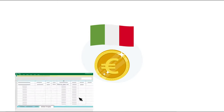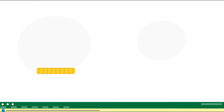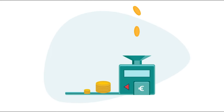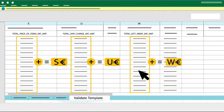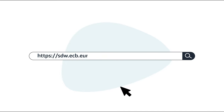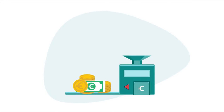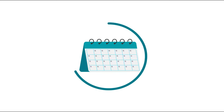For example, the reporting currency in Italy is Euro. If it does include a different currency, filter Column AA to only include the currency different than the reporting currency. Step 4: Convert to numbers the amounts in Column S Total Price of Items VAT AMT, Column U Total Ship Charge VAT AMT and Column W Total Gift Wrap VAT AMT. Step 5: To do their sum, convert the amounts to the reporting currency using the European Central Bank Currency Converter. To simplify the calculation, you can convert the total amount using only the exchange rate from the last day of the month — for example, for November 2020, use the exchange rate of the 30th of November 2020.